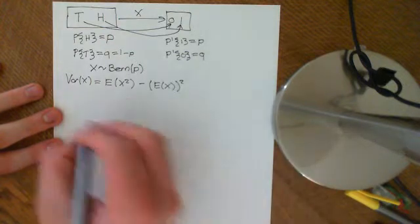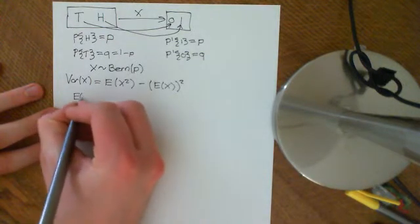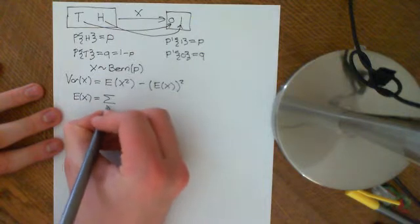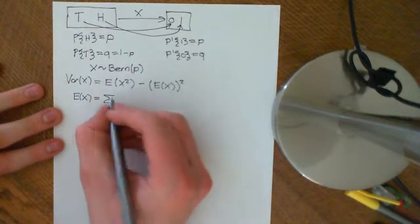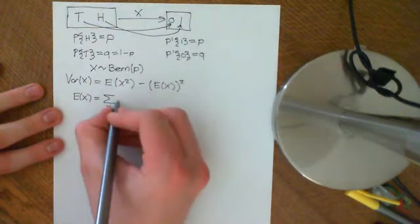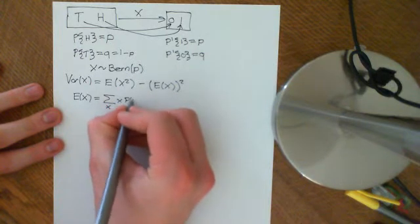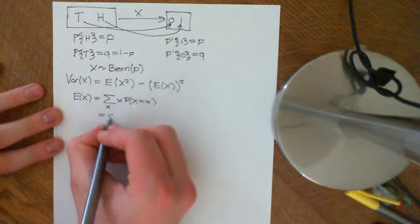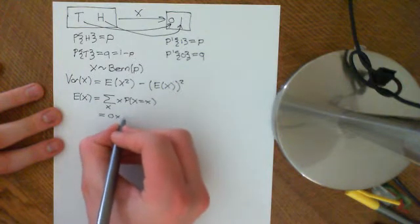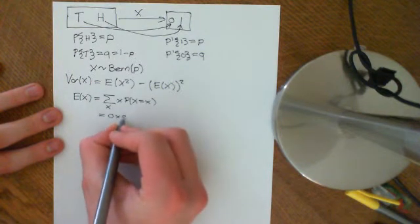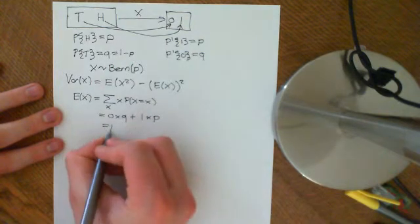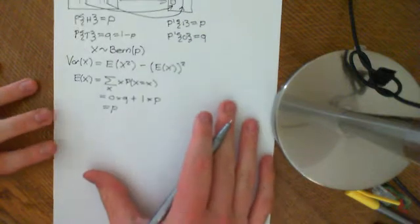The expected value of X for a Bernoulli distribution is the sum over every possible value it can take on — in this case just 0 and 1 — of x times the probability that X equals little x. This is equal to 0 times q plus 1 times p, which just gives p.